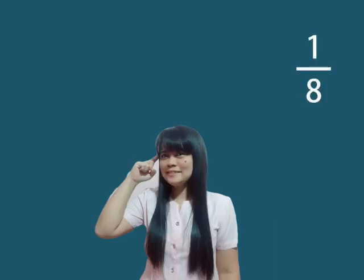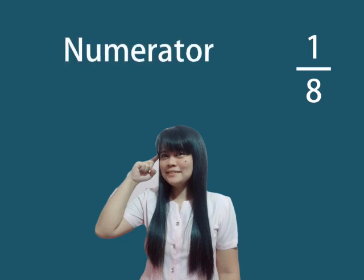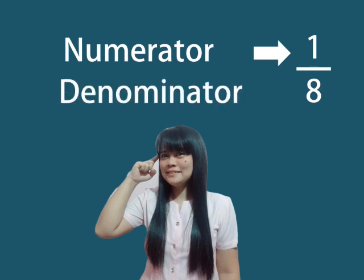One over eight is an example of Fraction. Numerator or the upper number. This is the part we took away. In the denominator or the bottom number, these are the total part of a whole.